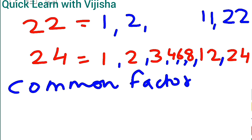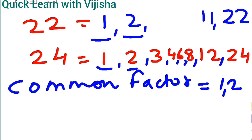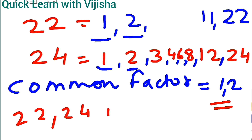Now coming to the common factors. The common factors of 22 and 24 are 1 and 2. Here we are getting 2 numbers as common factors — we need only 1 as the common factor. Since 2 is also included, 22 and 24 is not a co-prime number.